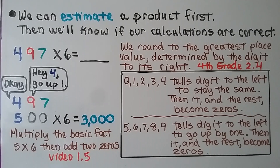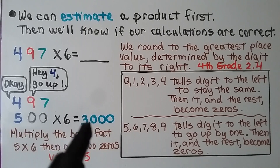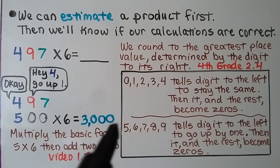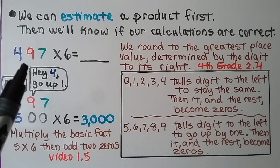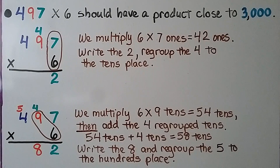We learned in the last video that we can multiply the basic facts of five times six and just add two zeros. Five times six is thirty, with two zeros is three thousand. So we know our estimate for 497 times six is three thousand, and we should have a product close to three thousand for the answer to be reasonable.